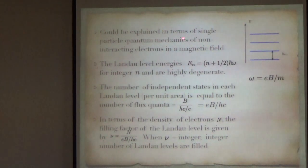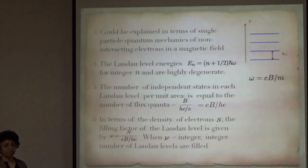At the quantum mechanical level, you can explain this in terms of the single particle energy levels of a system of electrons moving in a two dimensional sample in the presence of a perpendicular magnetic field. This is a problem which many of you would have done in quantum mechanics. The energy levels are ℏωc(n + 1/2) for integer values of n, and they are highly degenerate.